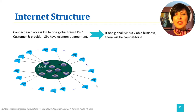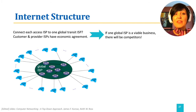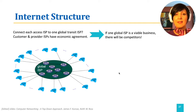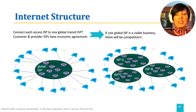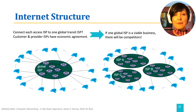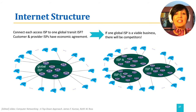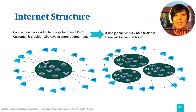This will naturally call for competition, and multiple ISPs may enter this competition of providing access to all other ISPs, similar to what we see in the figure on the right. This would need having connection to each and every access ISP, or providing this connection through other global ISPs.